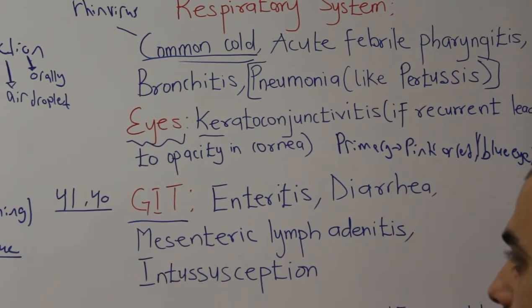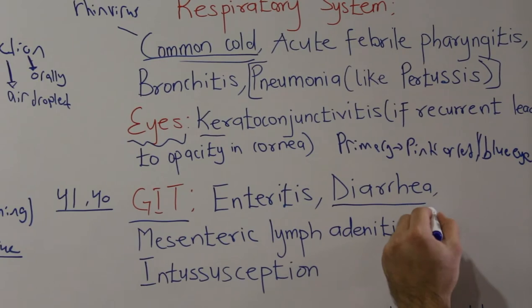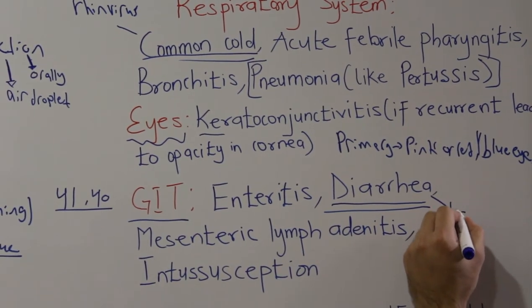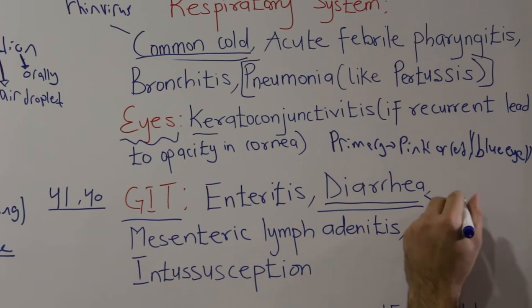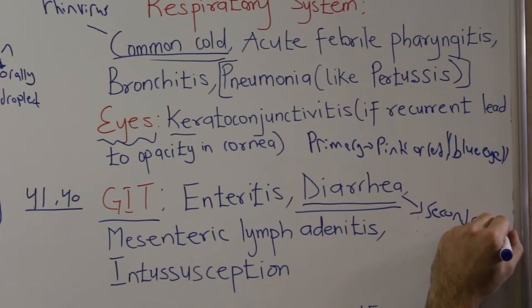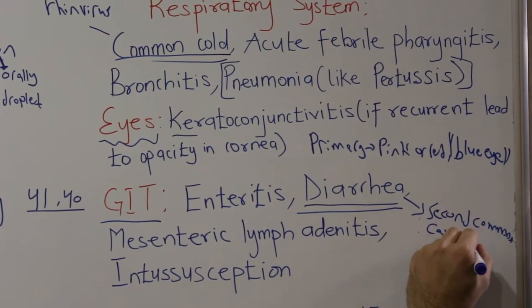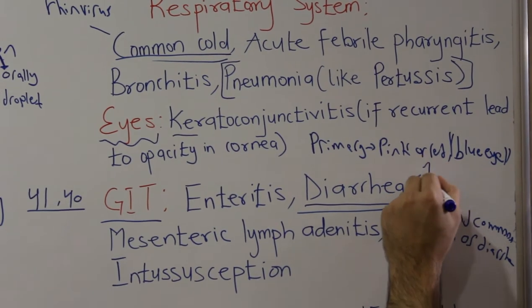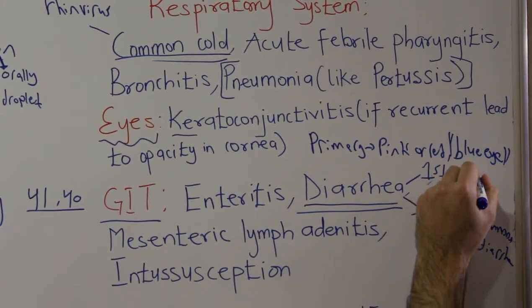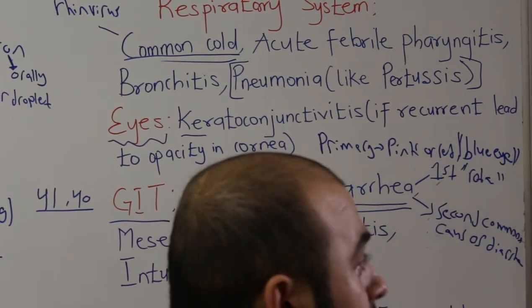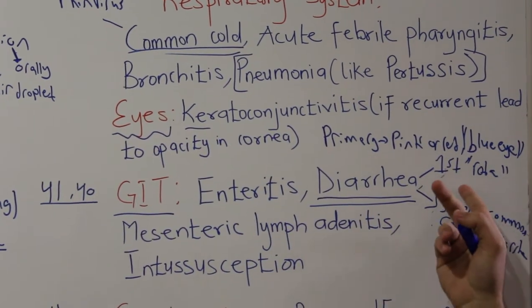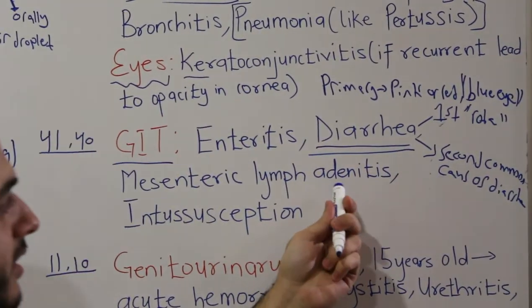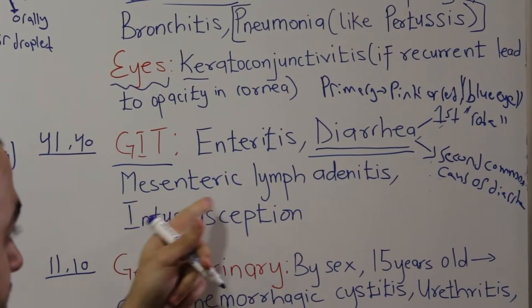In the GI tract, the virus can cause enteritis and diarrhea. Adenovirus is actually the second most common cause of diarrhea after rotavirus. Rotavirus is the first most common cause, and adenovirus is the second.